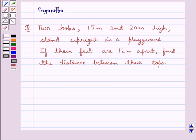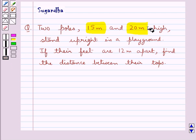Hello and welcome to the session. In this session we discuss the following question which says two poles, 15 meter and 20 meter high, stand upright in a playground.